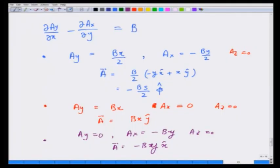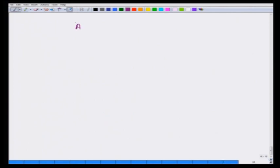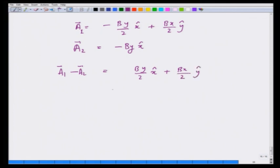Let us now look at two particular cases. I had A equals minus B y over 2 in the x direction plus B x by 2 in the y direction, and I also had A equals minus B y x. Let us take the difference. Let us call this A_1, A_2. A_1 minus A_2 is equal to B y by 2 x plus B x by 2 y, and this you can clearly see is a gradient of B x y by 2. So you have shown that the difference between the two vector potentials is equal to gradient of a scalar field.